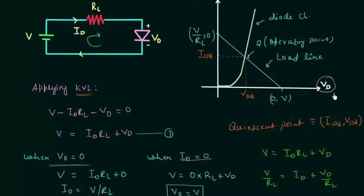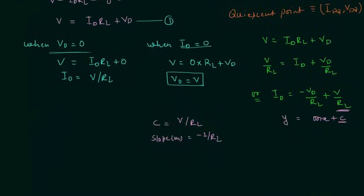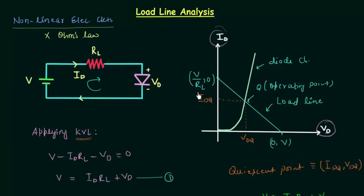VD is the X axis and ID is the Y axis, so M equals minus 1/RL, X is VD, and C is V/RL. By changing the load resistance RL, the slope changes, and therefore the Q point will also change. For example, if we increase RL, we get a new load line and the operating point shifts accordingly.